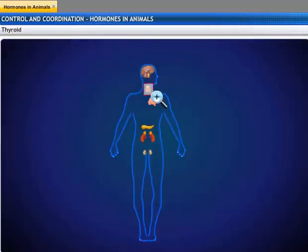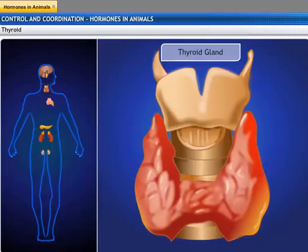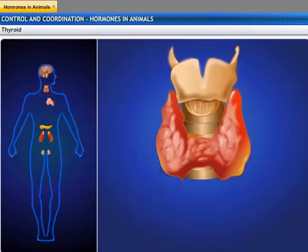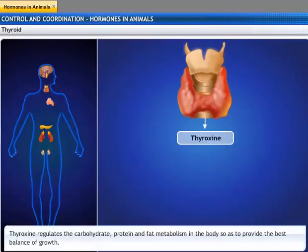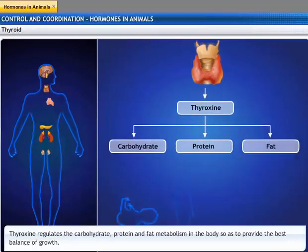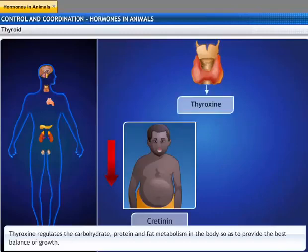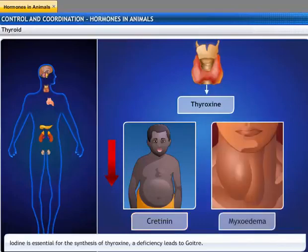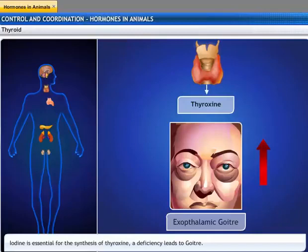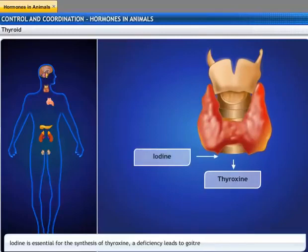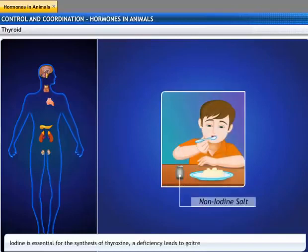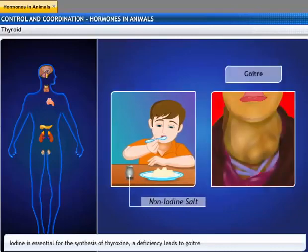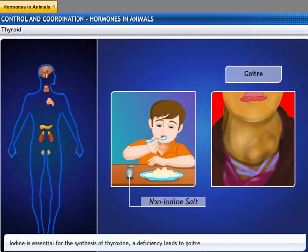The thyroid gland is located in the neck, ventral to the larynx, and is known as the largest endocrine gland. It produces thyroxin, a hormone which regulates carbohydrate, protein, and fat metabolism in the body, so as to provide the best balance of growth. Hyposecretion of thyroxin leads to cretinism in children and myxedema in adults, whereas hypersecretion leads to exophthalmic goiter in adults. Iodine is essential for the synthesis of thyroxin; a deficiency of iodine in our diet can lead to a deficiency of thyroxin, which may cause goiter. One of the symptoms of goiter is a swollen neck.